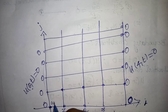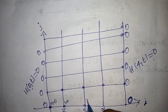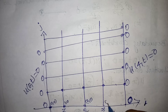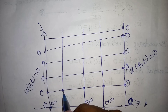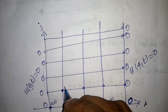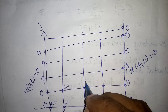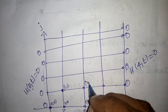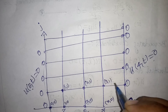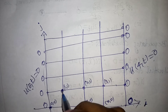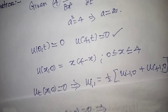Grid points established: along j=0 we have values 0, 3, 4, 3, 0 at i=0,1,2,3,4. At j=1, the interior values are computed as u(1,1), u(2,1), u(3,1) using the node-point formula.